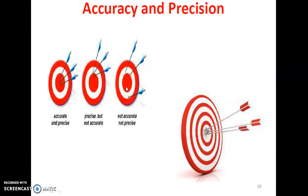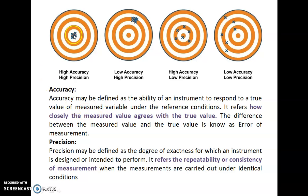This is the difference between accuracy and precision. Accuracy refers to how closely the measured value agrees with the true value. Precision is the repeatability or consistency of measurement — the instrument should give the same reading again and again. That is called precision.